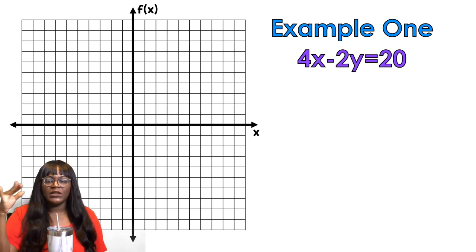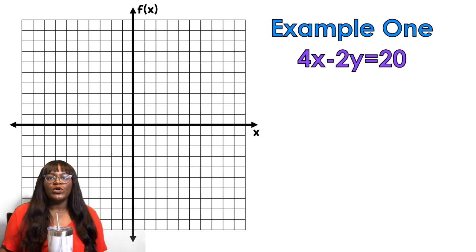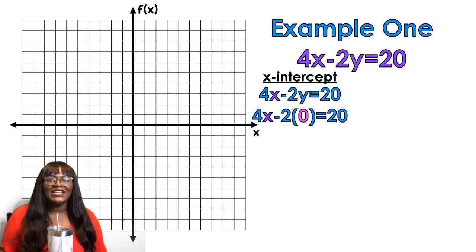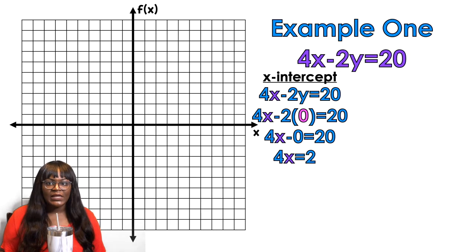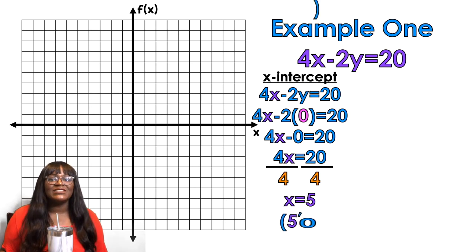Example number one: 4x minus 2y equals 20. To find the x-intercept, we're going to plug in zero for y and solve for x. So 4x equals 20 — divide by 4 on both sides — x equals 5. So my x-intercept is (5, 0). That's my first point.